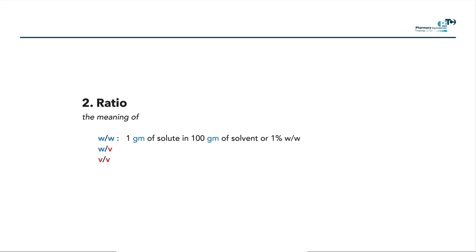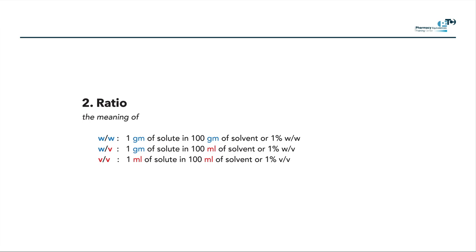The other expression, weight per volume, is the most common one in many problems. Weight per volume means one gram of solute is dissolved in 100 milliliters of solvent. So any expression like 0.2% or 1% weight per volume — the unit of the solute weight is grams, not milligrams — it's very important to take care of this. The solvent unit is milliliters, not liters. The last expression, volume per volume, means one milliliter of solute dissolved in 100 milliliters of solvent.